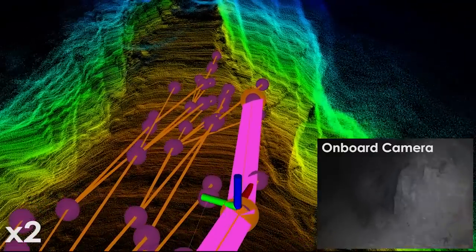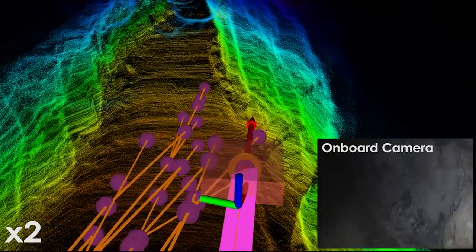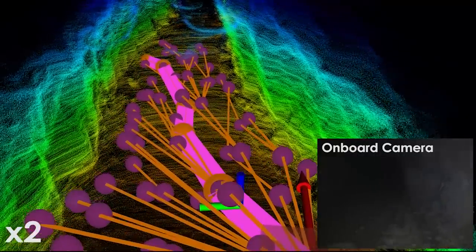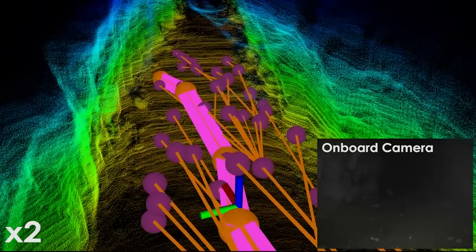and continued to progressively explore the main drift. When the battery reached its critical level, the homing procedure was automatically triggered to bring the robot back to the home position safely.